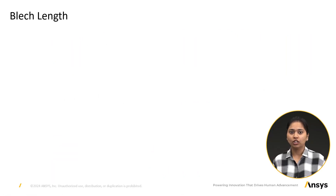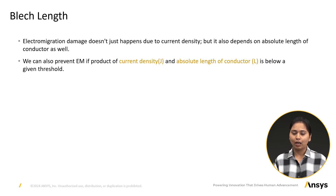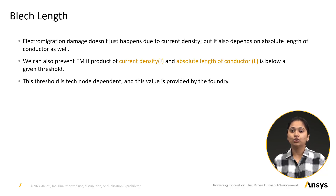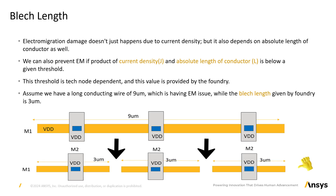Bletch length: electromigration does not just occur due to current density but also depends on the absolute length of the conductor. We can prevent EM violations if the product of current density and absolute length of the conductor is below a given threshold. This threshold is dependent upon the tech node and its value is provided by the foundry. For instance, if we have a long conducting wire of 9 micrometers which has an EM violation and the bletch length given by the foundry is 3 micrometers, dividing the 9 micrometer length metal into smaller pieces of 3 micrometers resolves the EM issue, as shown in the figure. Note that if the current is too high, even after dividing the conductor it may not resolve the issue.